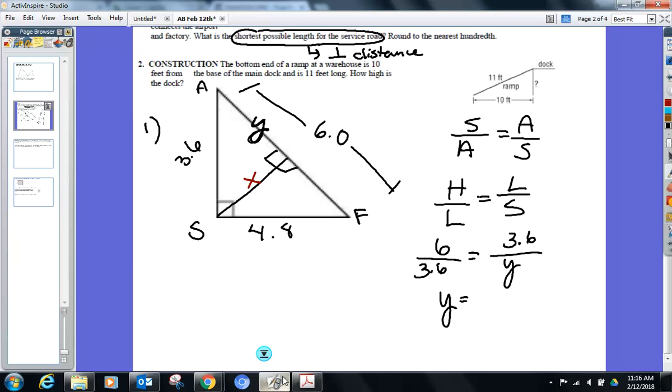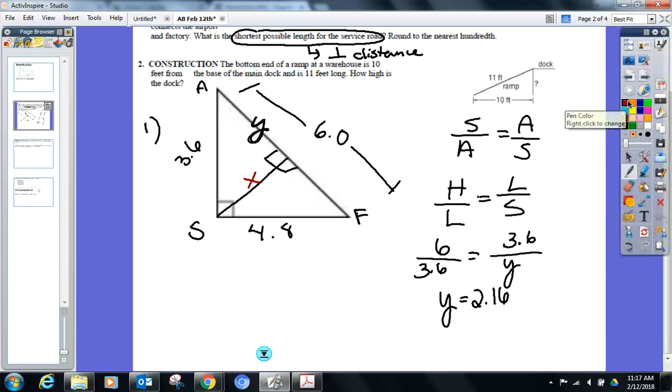And what is the length of that segment that we're finding? Length of that segment? I didn't get 2.6. What are we doing here with the proportion? 3.6 times 3.6, and then you divide it by 6. There we go, 2.16.